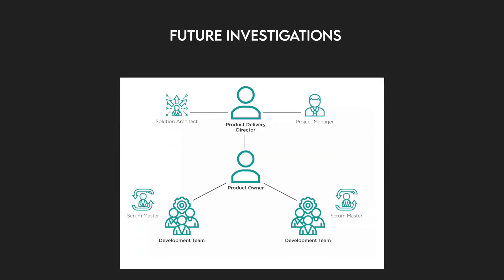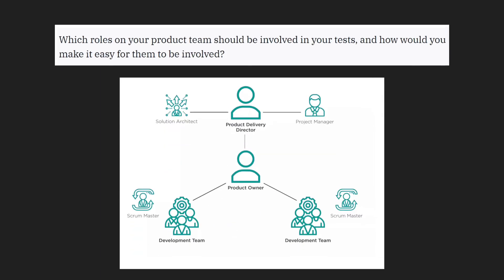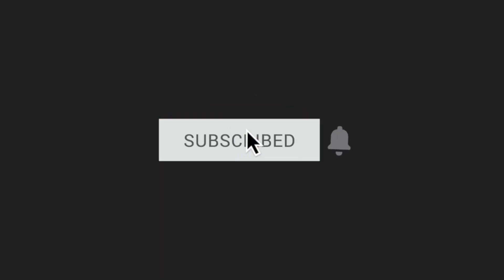Future investigations: Which roles on your product team should be involved in your test, and how would you make it easy for them to be involved? This tests whether you have real industry experience and how you've collaborated with teams in the past — they're looking for stories of past experiences. Like any data science interview question, approach A-B test questions with curiosity. You're being tested on your command of statistics and math, but also on your thinking process and ability to look at the big picture. Good luck and have fun, and please subscribe to this channel for more videos like this.